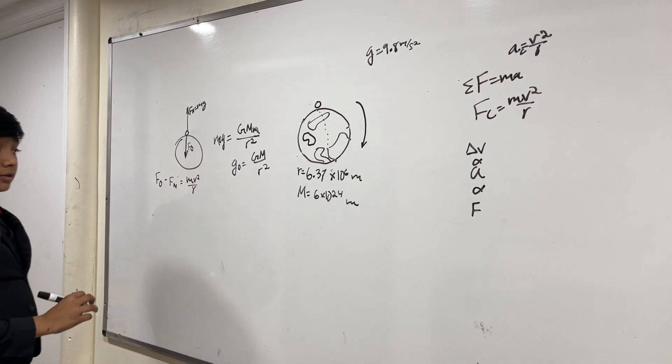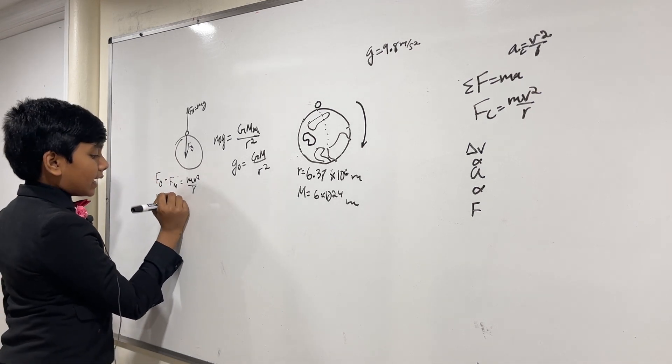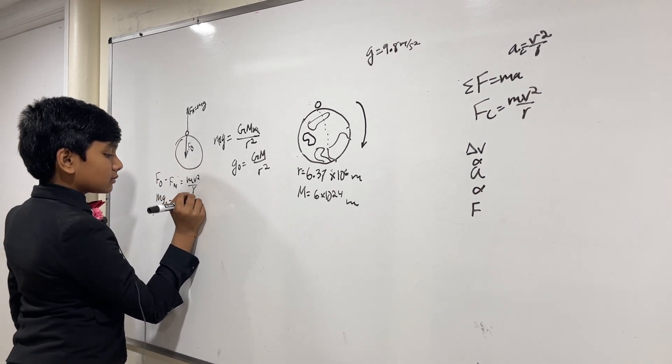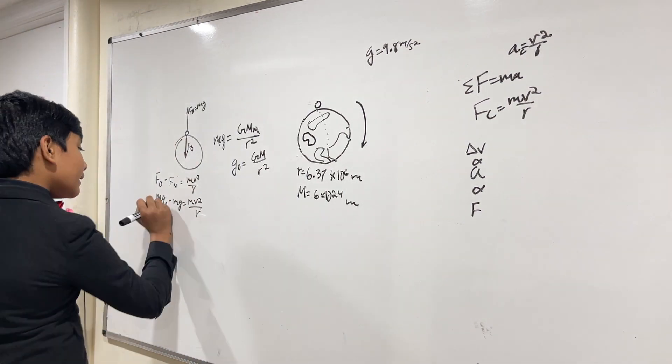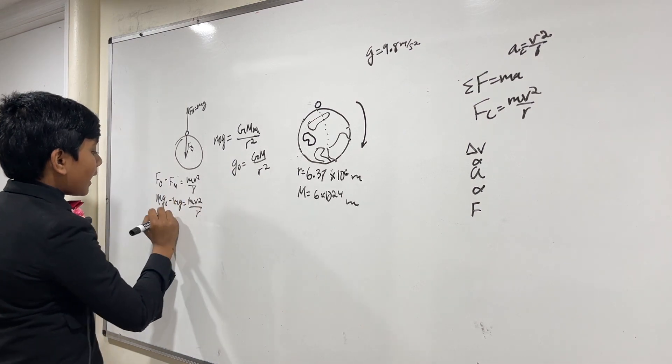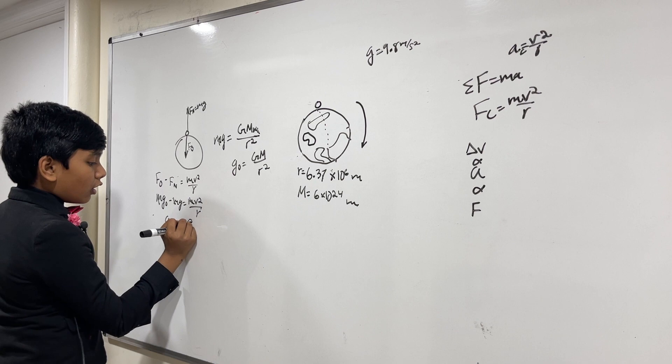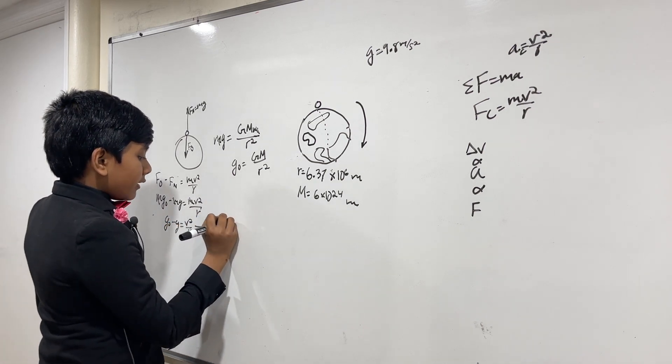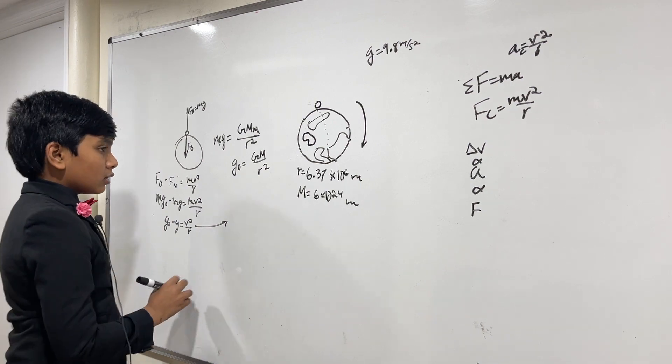And now, what we're going to do is this. This is M G naught minus M regular G. Now, using some magic maths, we can cancel out all of these M's, leaving us with G naught minus G is equal to V squared over R. How do we find the velocity of Earth spinning on the equator?